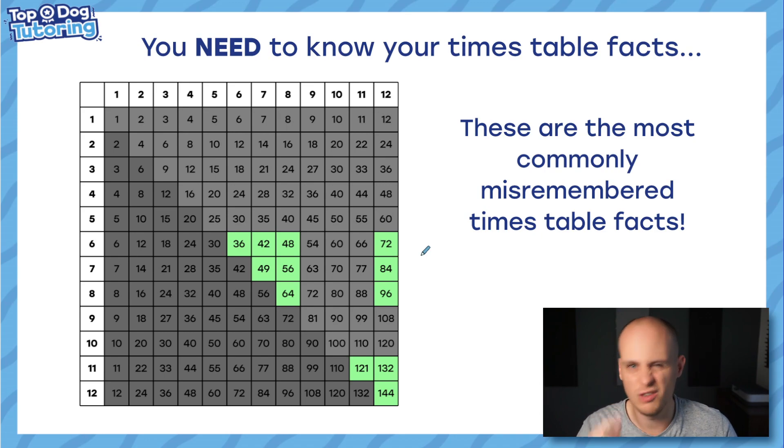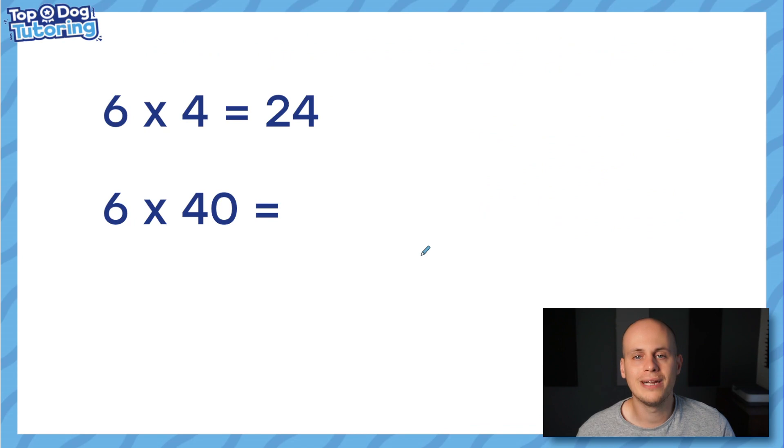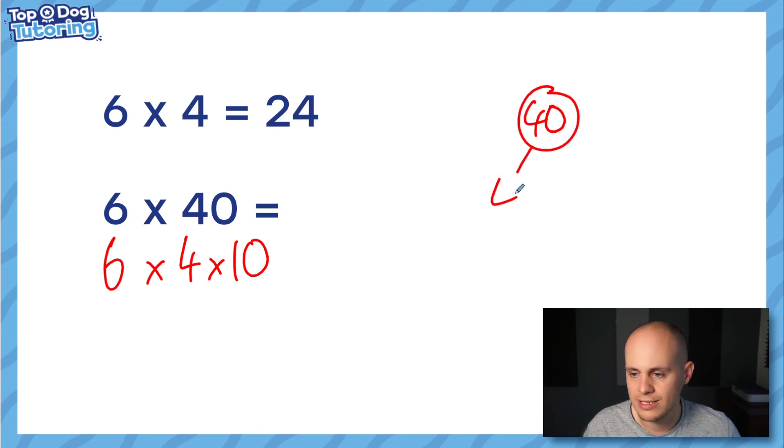On to related facts. We can use knowledge like times tables to solve other questions in our heads not having to use formal written methods. For example, when I see 6 x 40, I'm really thinking I'm using the fact 6 x 4 in my head to solve it, because I could rewrite this question as 6 x 4 x 10. Remember, 40 if I split it into its factors is the same as 4 x 10. So really what happens is you've just got the same question as above, 6 x 4, but then you're timesing it by 10 at the end, which is why people often say if you see that zero, it's just 6 x 4 with a zero on the end.